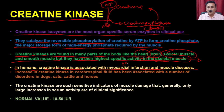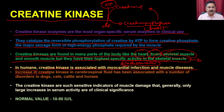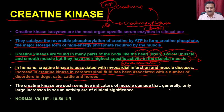Myocardial infarction is a cardiovascular disease where the heart muscles are affected. Creatinine kinase in general gives you the indication that there is a problem with muscular disorders. An increase in creatinine kinase in cerebrospinal fluid has been associated with a number of disease disorders in dogs, cats, cattle and horses. Creatinine kinase is a sensitive indicator of muscle damage and generally only large increases in serum activity are of clinical significance. The normal value is 10 to 50 international units per ml.